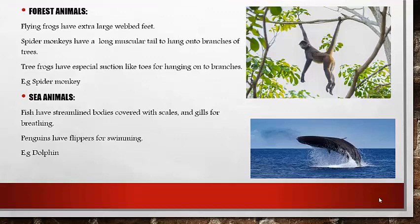Now we have forest animals. The animals who spend their life in dark forests are called forest animals. These animals are adapted to suit their forest life. Like in this picture, you see a spider monkey — they have a long muscular tail to hang on to branches of trees. Other examples include flying frogs, which have large webbed feet, and tree frogs, which have special suction-like toes for hanging on to branches.